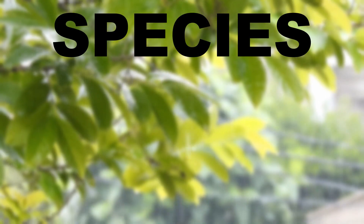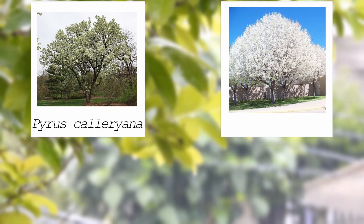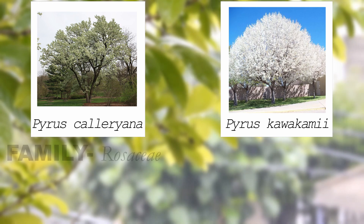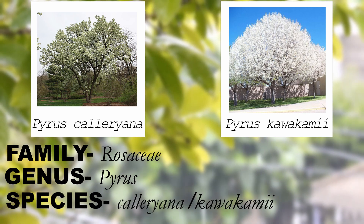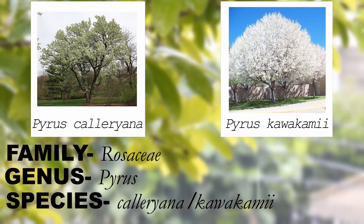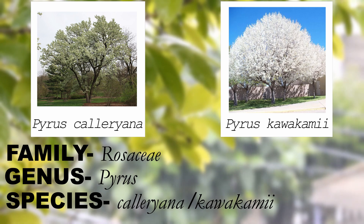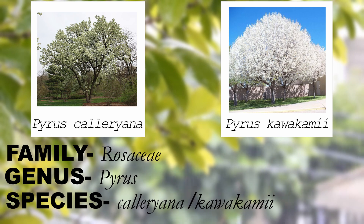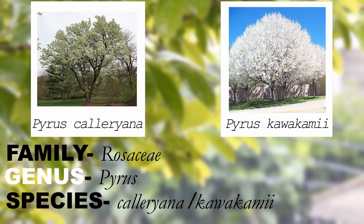In species, it's a natural group of trees in the same genus made up of similar individuals. For example, you have an ornamental pear — it's a pyrus calleryana — and then there is an evergreen pear, that's a pyrus kawakamii. Both of those are in the rosaceae family and their genus is pyrus. But the species makes them different. The ornamental pear is more upright, with a somewhat broad canopy and smooth bark. The evergreen pear has a really broad canopy and rough, dark bark — a completely different looking tree. But if you look at the flowers and the fruit, there are a lot of similarities. They're in the same genus and the same family.